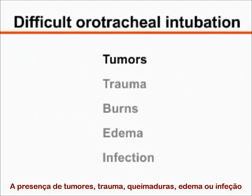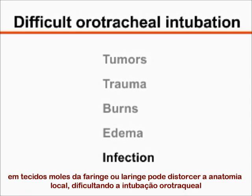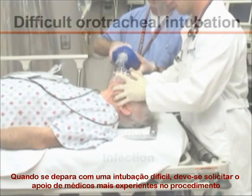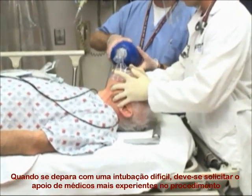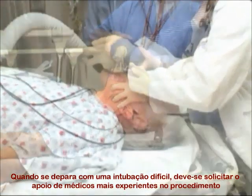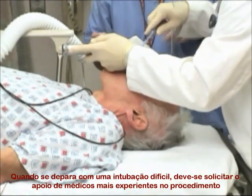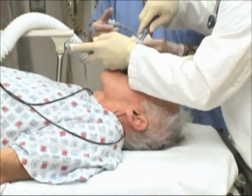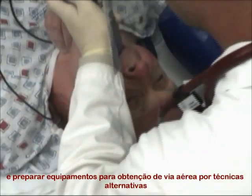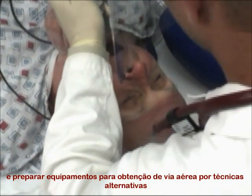The presence of tumors, trauma, burns, edema, or infection of the pharyngeal or laryngeal soft tissues may distort airway anatomy, leading to difficult orotracheal intubation. When faced with a potentially difficult airway, consulting with an experienced intubator and preparing to use an alternative intubation technique are recommended.